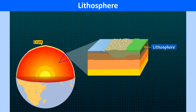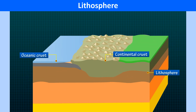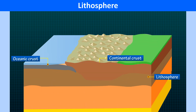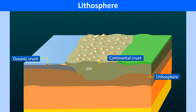The lithosphere consists of two types of crusts: continental and oceanic. The continental crust runs below the continents. It is the upper crust and is also called sial, which is made up of silica and alumina. Its thickness varies between 40 and 100 km, and it is thicker under the mountains.